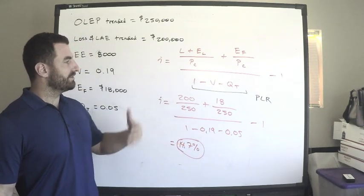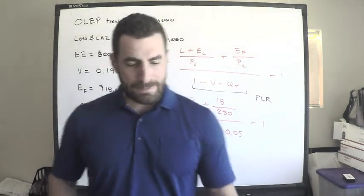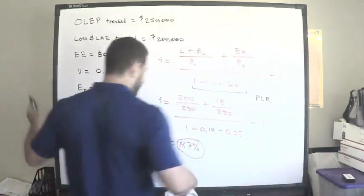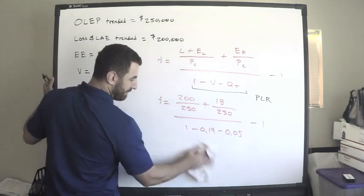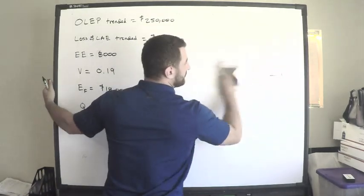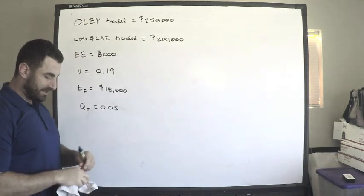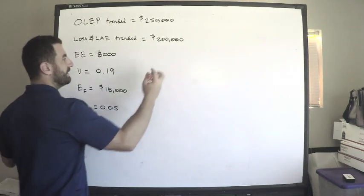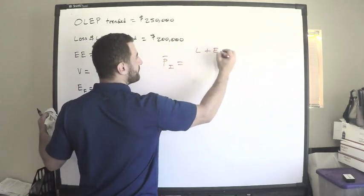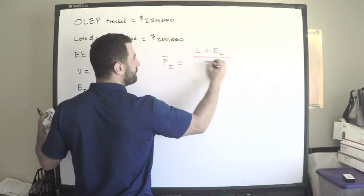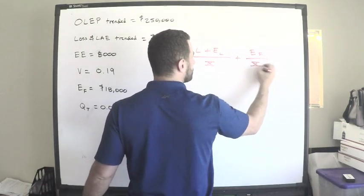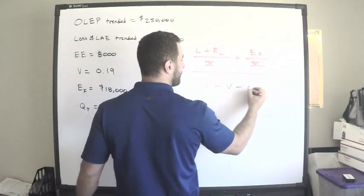Part B is now do the same thing but using the pure premium method. The loss ratio method gives us the percentage. Remember, the pure premium method gives us a dollar amount, an actual dollar amount of what we should charge. The average indicated premium is going to be the losses plus the loss adjustment expense divided by exposures plus the fixed expense divided by exposures, divided by 1 minus v minus qt.